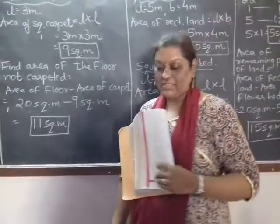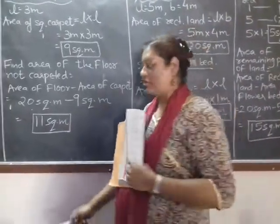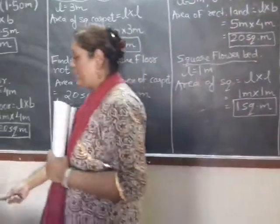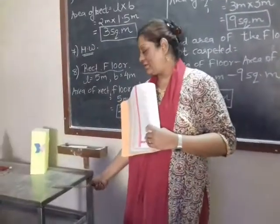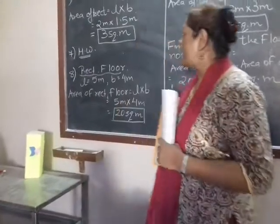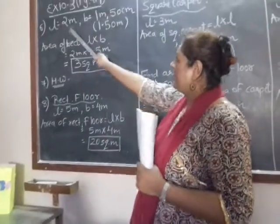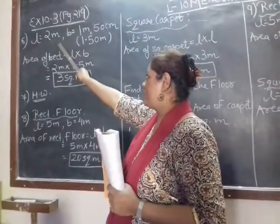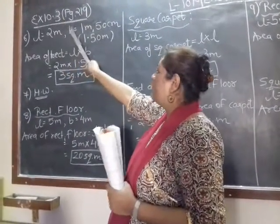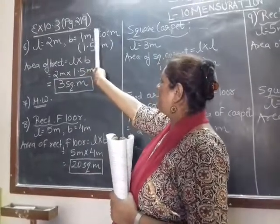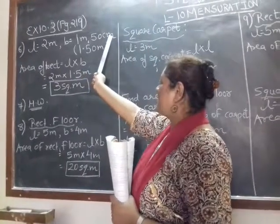Table top means the top surface of the table — this is called a table top. Now here, length is 2 meters. But what about breadth? Breadth is 1 meter 50 centimeters.